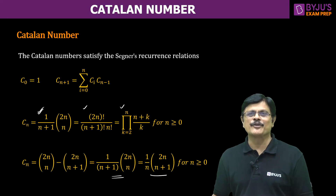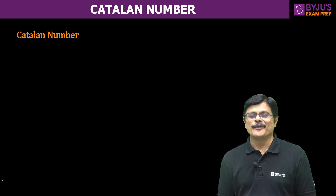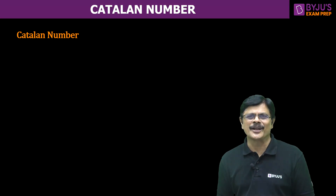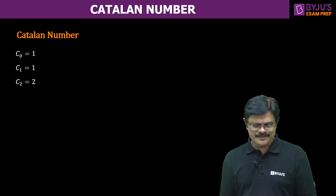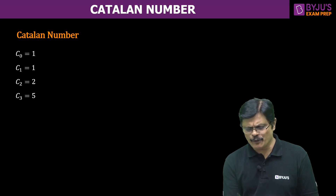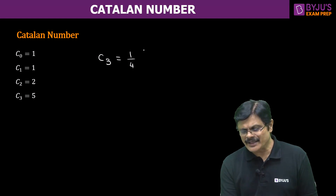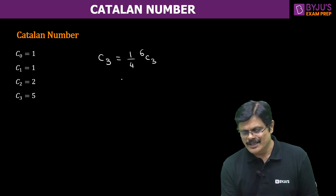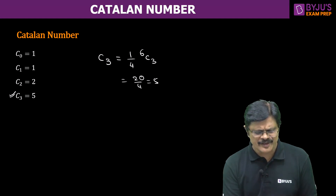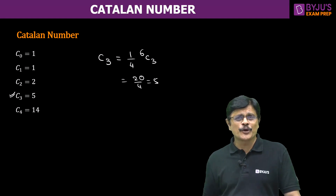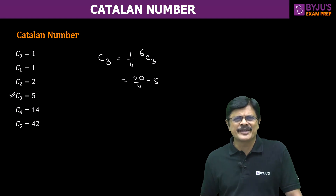Now let us see the problems for which Catalan number is the solution. Before that, one should know the starting 5 or 6 Catalan numbers — that is good for health. C0 is 1, C1 is 1, C2 is 2, C3 is 5. If you want, you can verify using the formula: 1 by (n+1) times 2n choose n. For n=3, this gives 20 divided by 4, which is equal to 5. You can always verify this. It is very, very simple.